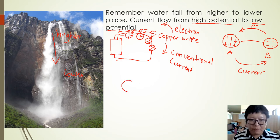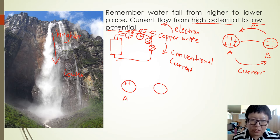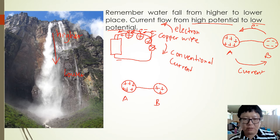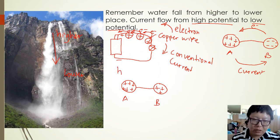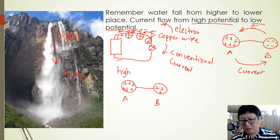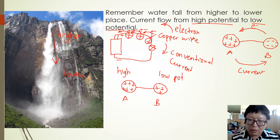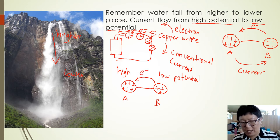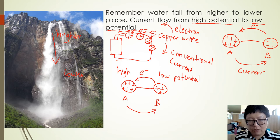Another example: if there are two objects with different charges — A has more positive charge and B has less positive charge — when you connect them, A has the higher potential because it has more positive charge, and B is the low potential. So electrons will move from B to A, because B has more electrons than A. But the current will move from A to B.